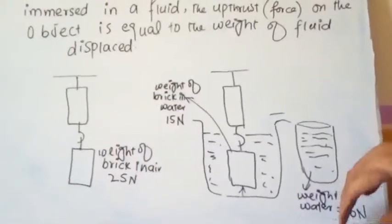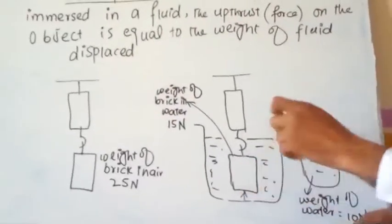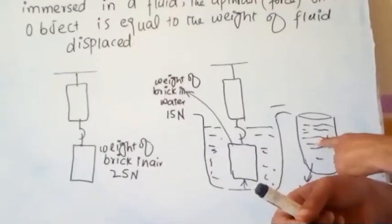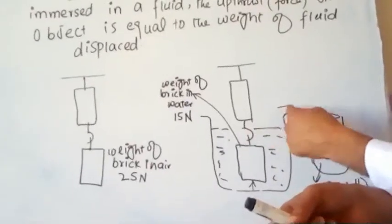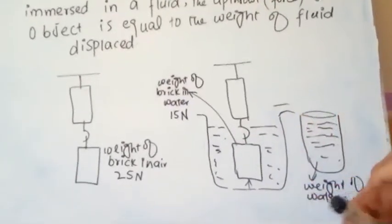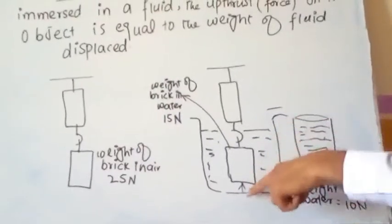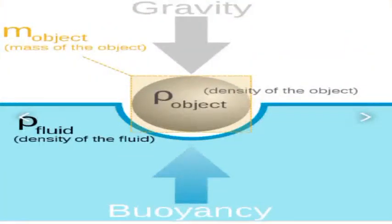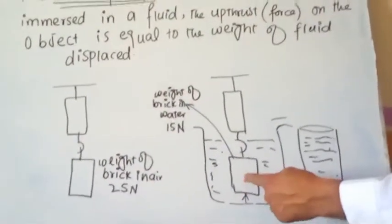This 10 Newton is equal to the upthrust exerted by the water on the brick — it equals the weight of the water displaced. The water displaced by the brick is collected in the glass, and when we weigh it, that weight equals the upward force the water exerts on the brick. This force is known as upthrust.